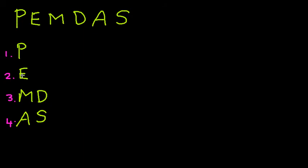So P is parentheses, E is exponents, M and D is multiplication and division, A and S are addition and subtraction. Let's look at a simple example.